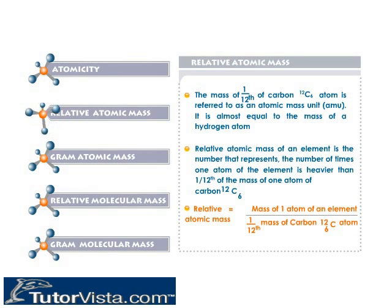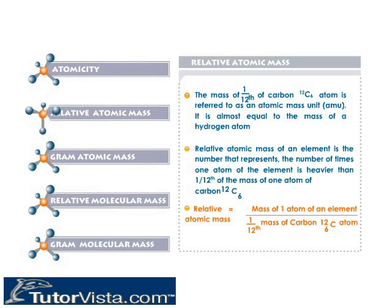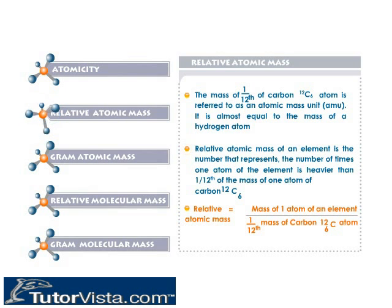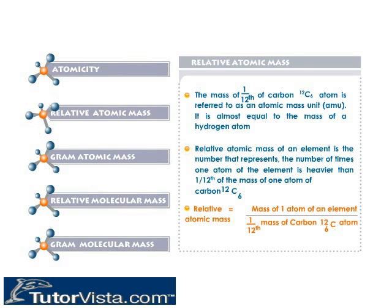Relative atomic mass: The mass of one-twelfth of a carbon C-12 atom is referred to as an atomic mass unit (AMU). It is almost equal to the mass of a hydrogen atom. The relative atomic mass of an element is the number that represents how many times one atom of the element is heavier than one-twelfth of the mass of one atom of carbon C-12.